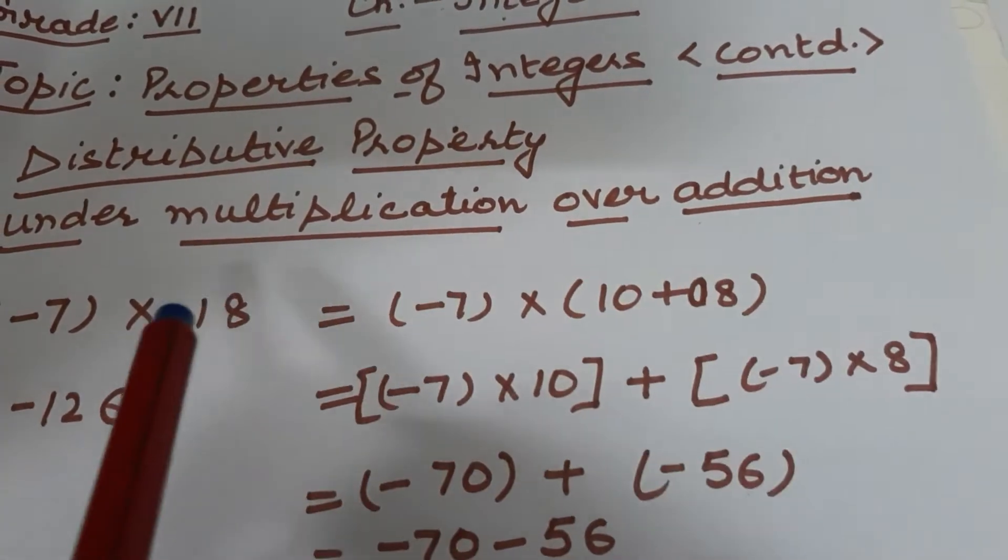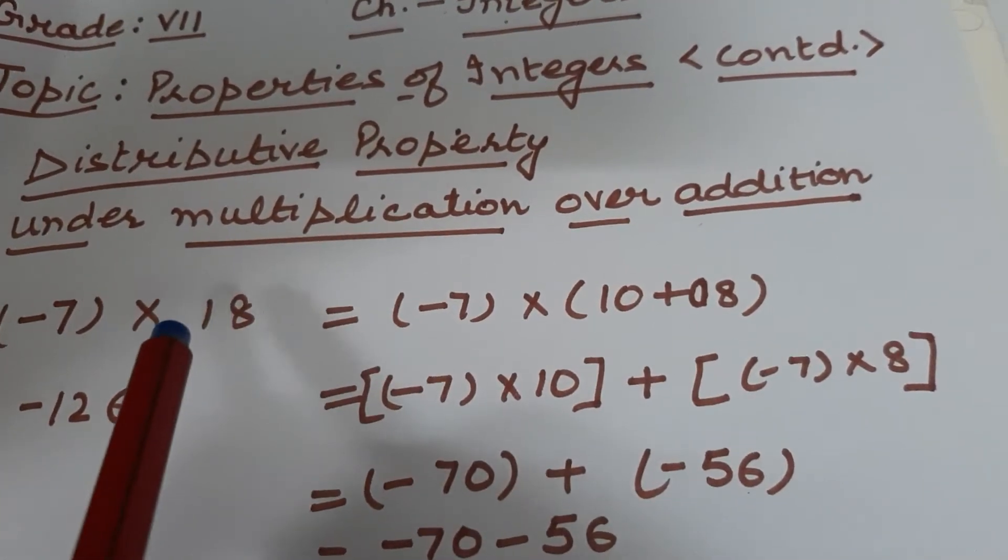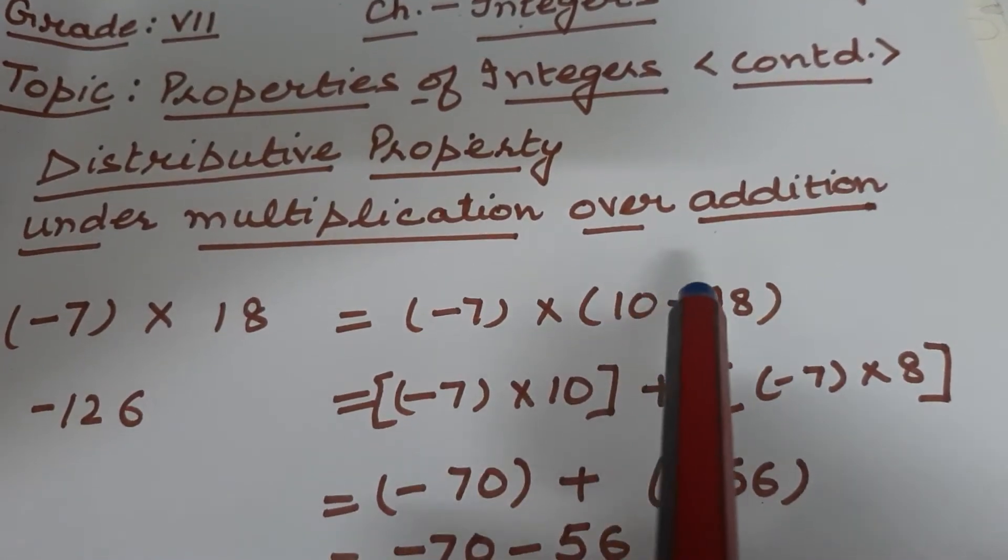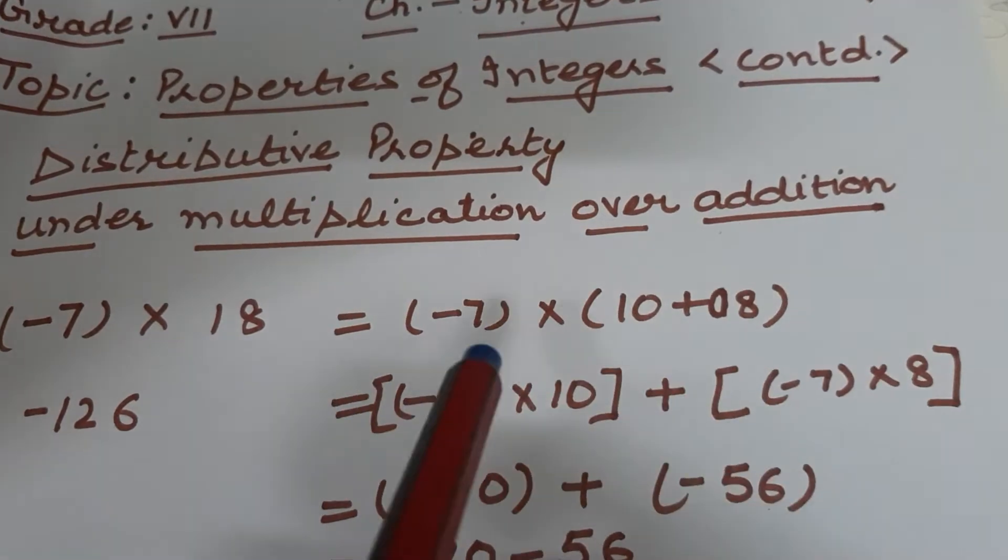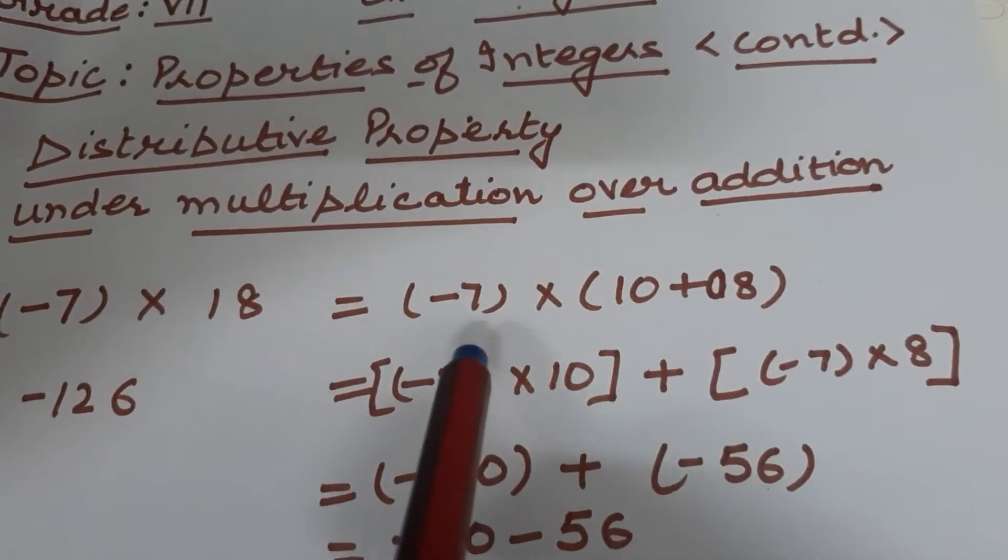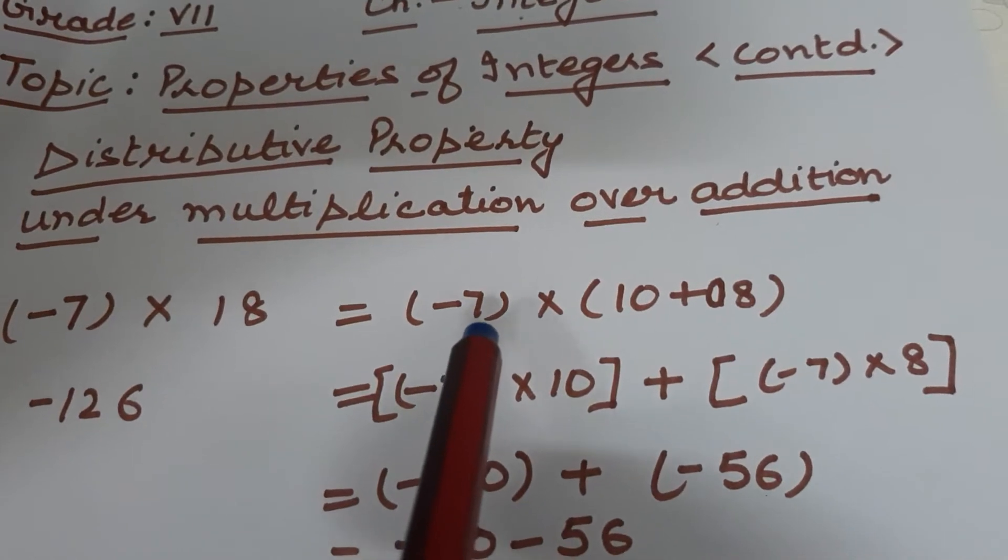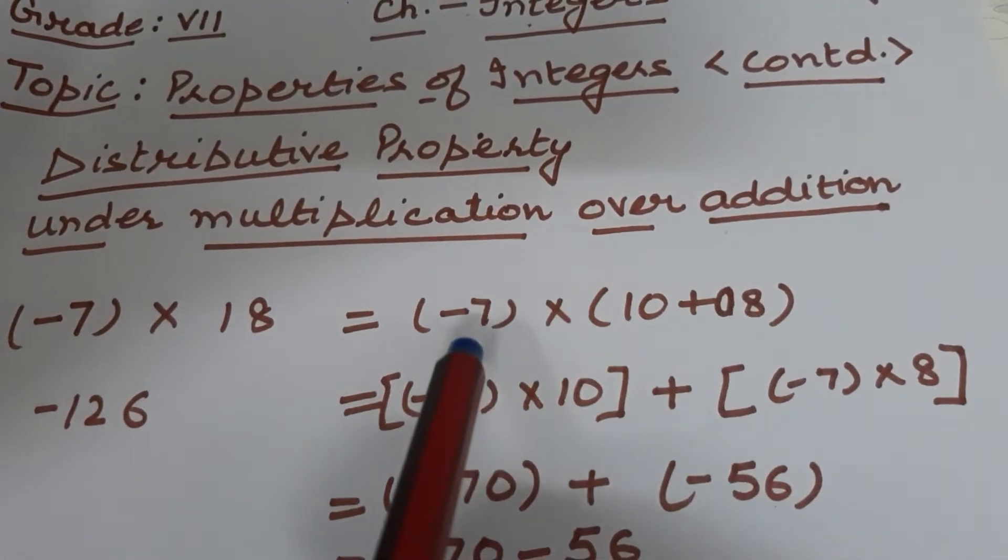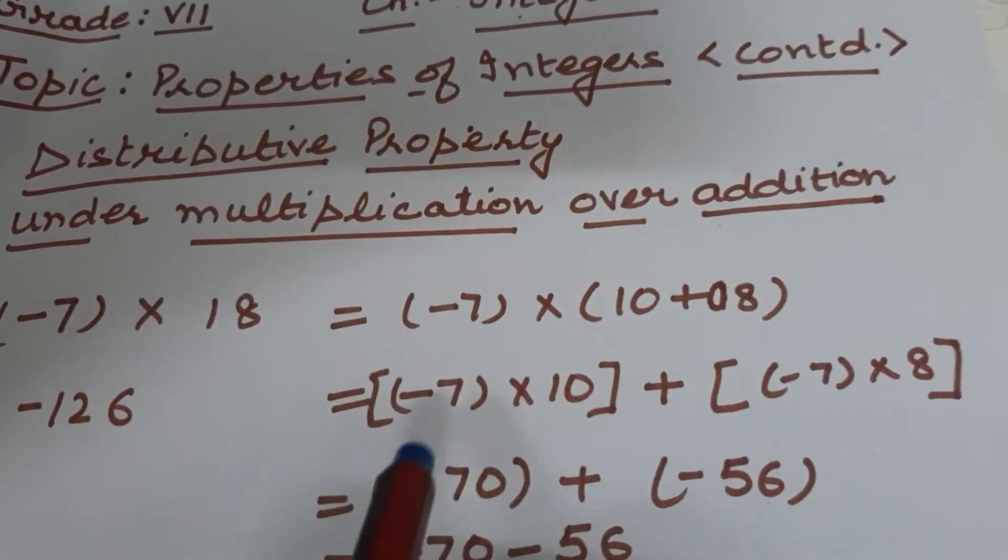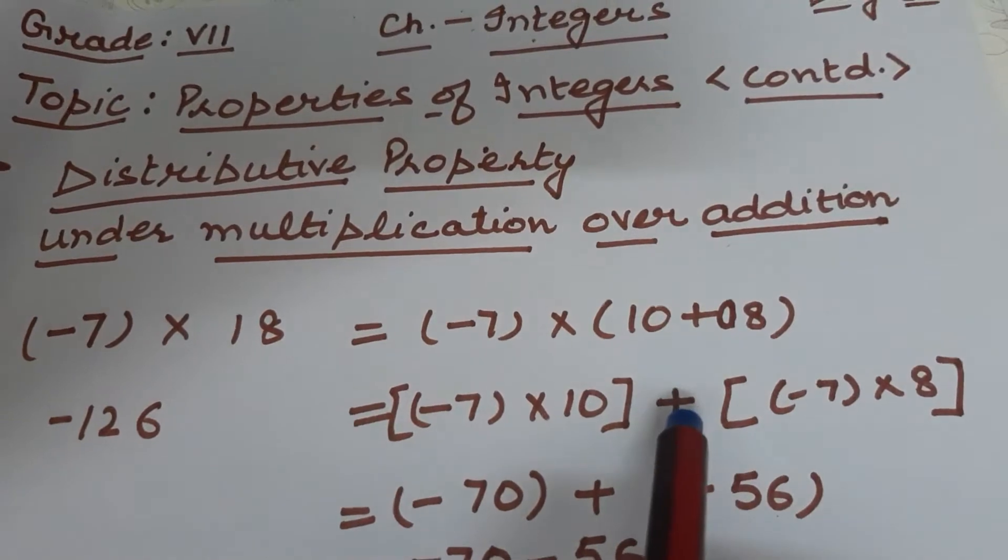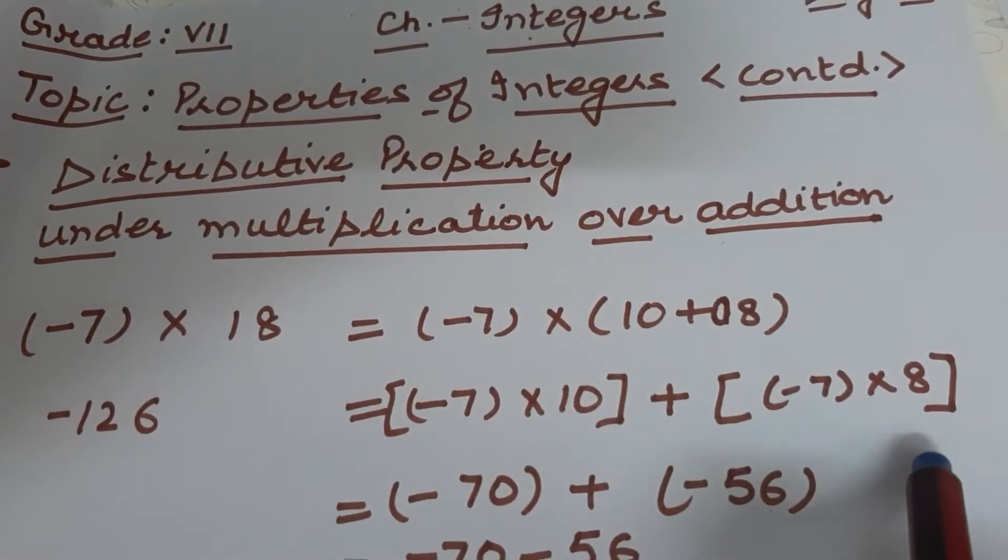How are you supposed to break this number? This number should be in tens, hundreds, or thousands, and so on. So 18 can be written as 10 plus 8. Now multiply this minus 7 with both these numbers because it is written outside the bracket. So minus 7 into 10, then this sign, then again minus 7 into 8.